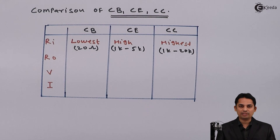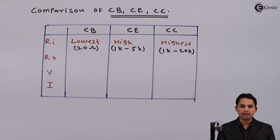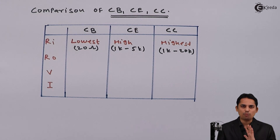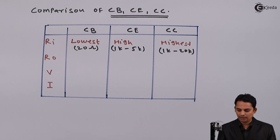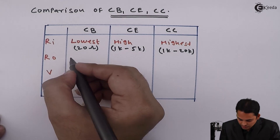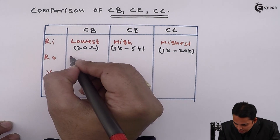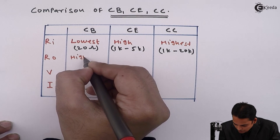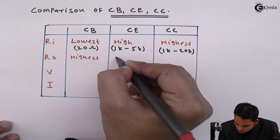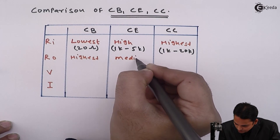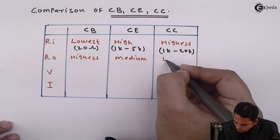The next point of comparison is output impedance. In case of common base amplifier, output impedance is highest. In case of common emitter amplifier, output impedance is moderate, whereas in case of common collector amplifier, the output impedance is lowest. So it is going to be highest, medium, and lowest respectively.